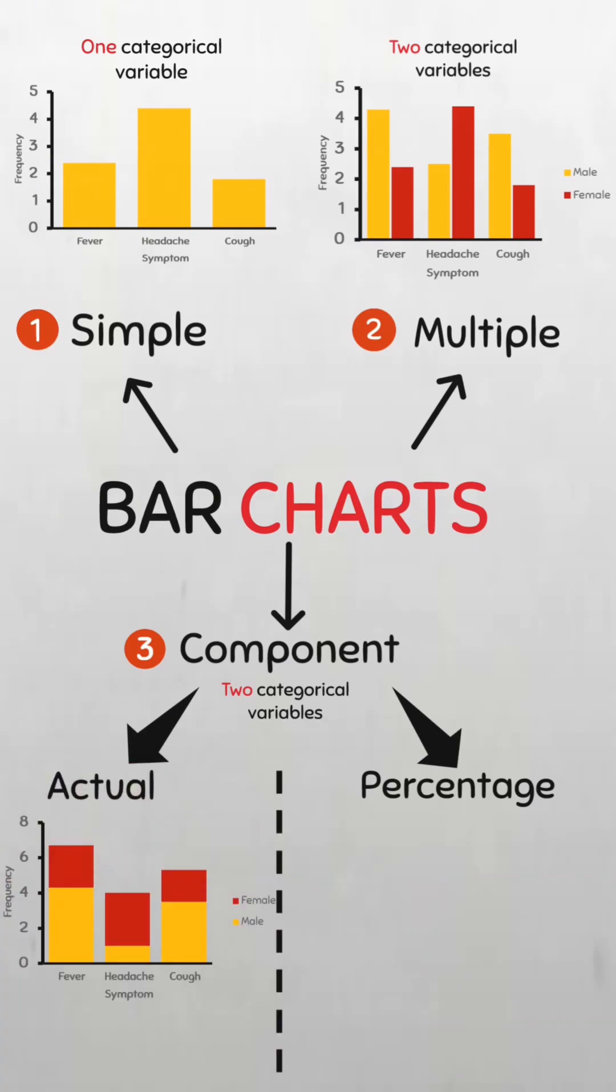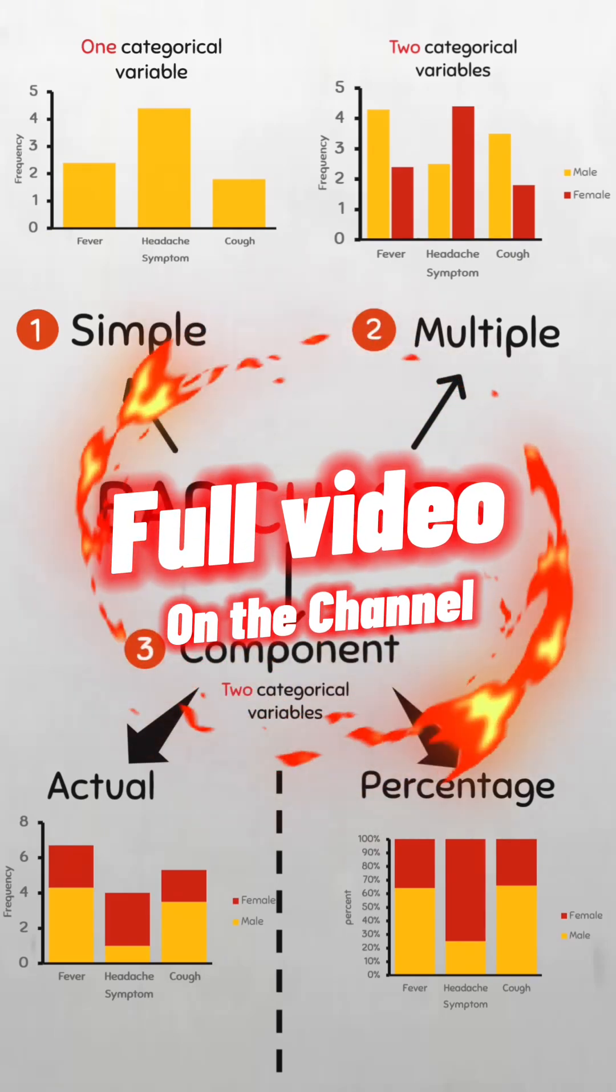In the percentage component bar charts, the length of the individual components represent the percentage of each component from the overall total of each category. Notice that all the bars are the same length and they are all 100mm.